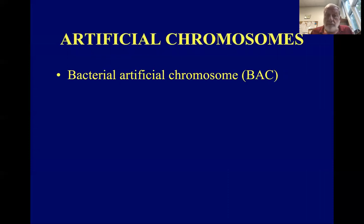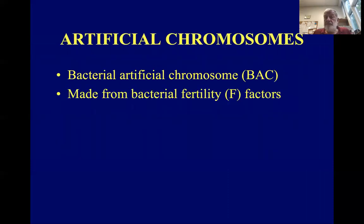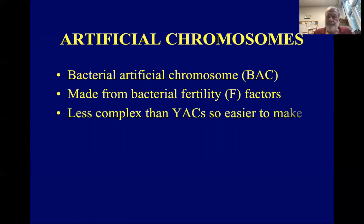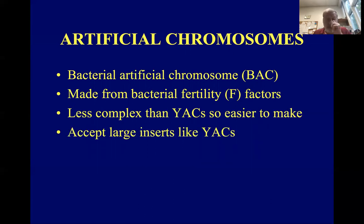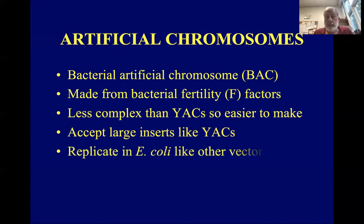BACs are bacterial artificial chromosomes. They're made from bacterial fertility factors, which are circular molecules involved in bacterial sexual reproduction. They're less complex than YACs, so they're easier to make. Like YACs, they can accept a large insert, and they replicate in E. coli just like other vectors.